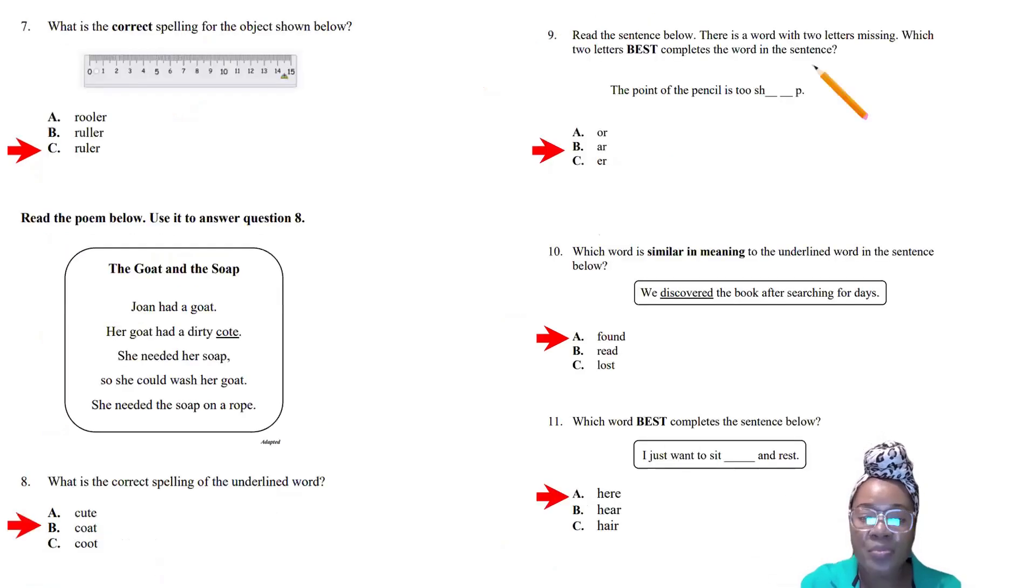Question seven: What is the correct spelling of the object shown below? You see a ruler, and you know the correct spelling is R-U-L-E-R, ruler. Then you should read the poem 'The Goat and the Soap' and look at the underlined word C-O-T-E. That's not correct; coat is spelled C-O-A-T.